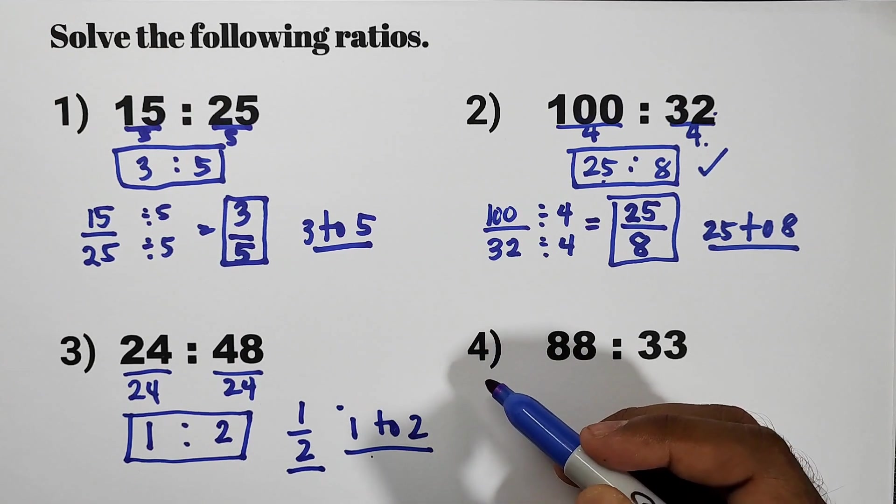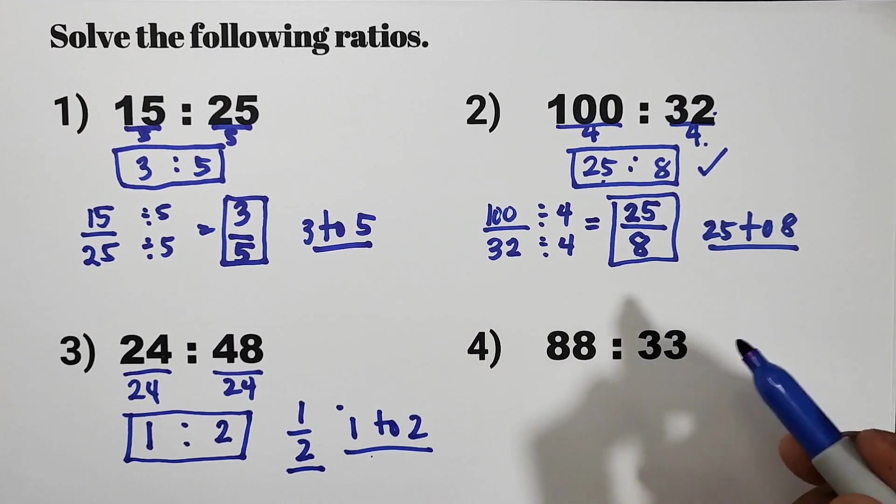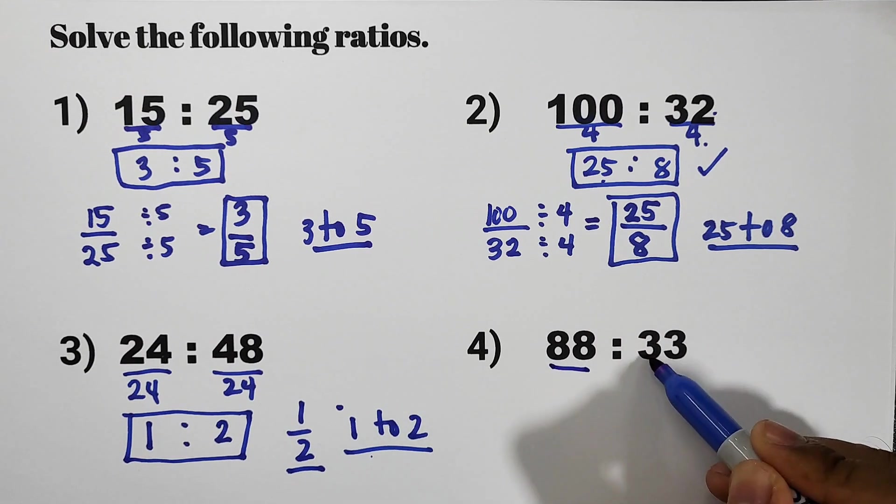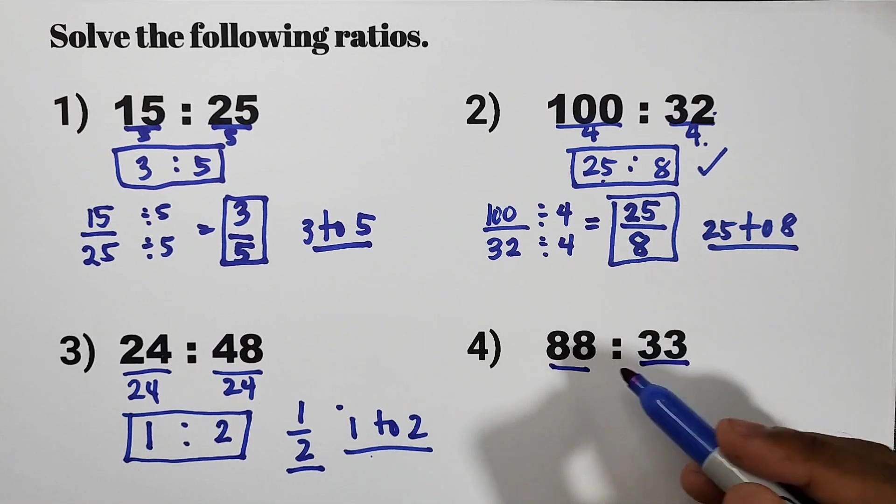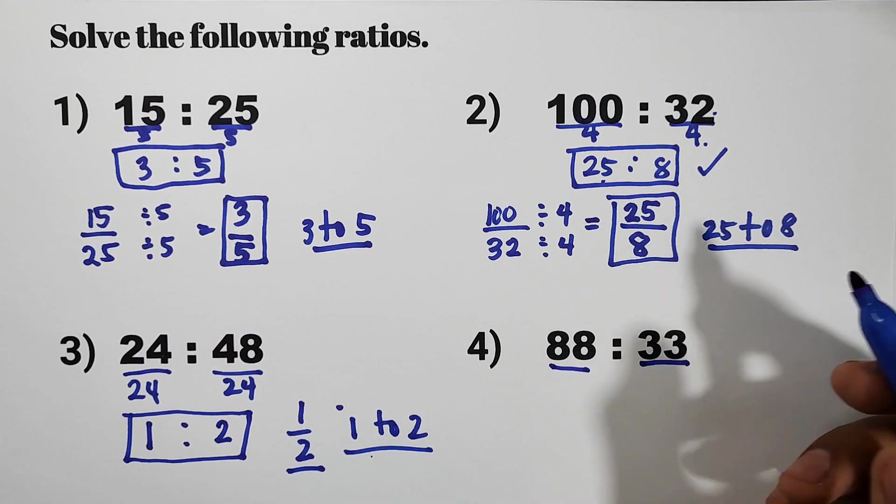And then number 4, 88 to 33. Now let us have the greatest common factor of 88 and then 33. Obviously, 88 and 33 has 11 as the greatest common factor.